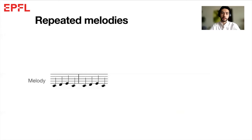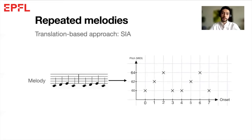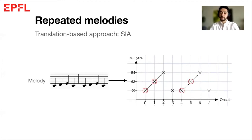So to solve this, we decided to use SIA, which is basically a geometric pattern-finding algorithm which uses translation vectors. Taking the first two bars of Frère Jacques, which can also be displayed as points on a 2D plane, with the x-axis being the onsets and the y-axis being the MIDI pitches.